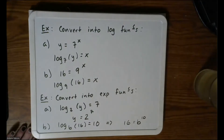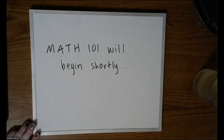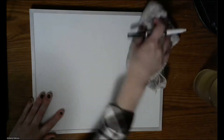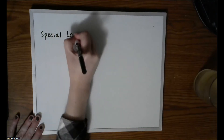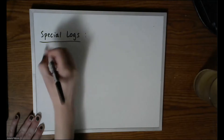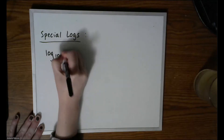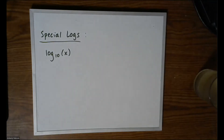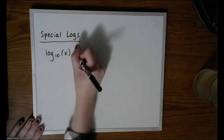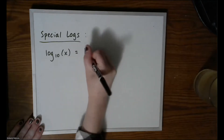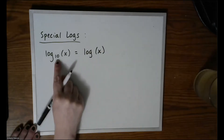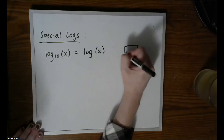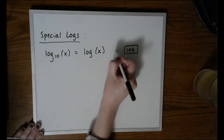Before moving on to specific properties, it's worth discussing two special types of logs. We have log base 10 — this one shows up all the time. If you have log base 10 of x, oftentimes you just drop the 10. So if you see log of x, it is implied that it's base 10. On your calculator you'll see just a log button — that's log base 10.